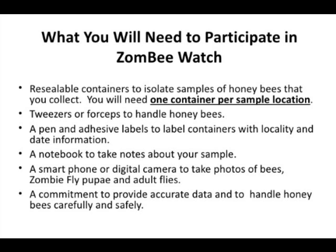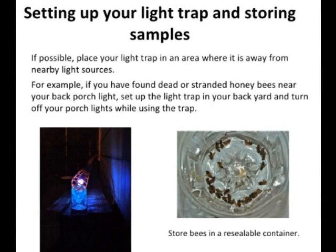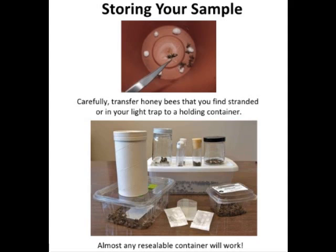The traps are cheap and easy to make. If possible, place your light trap away from nearby light sources. For example, if you have found dead or stranded honeybees near your back porch light, set up the trap in your backyard and turn off your porch light while using the trap.